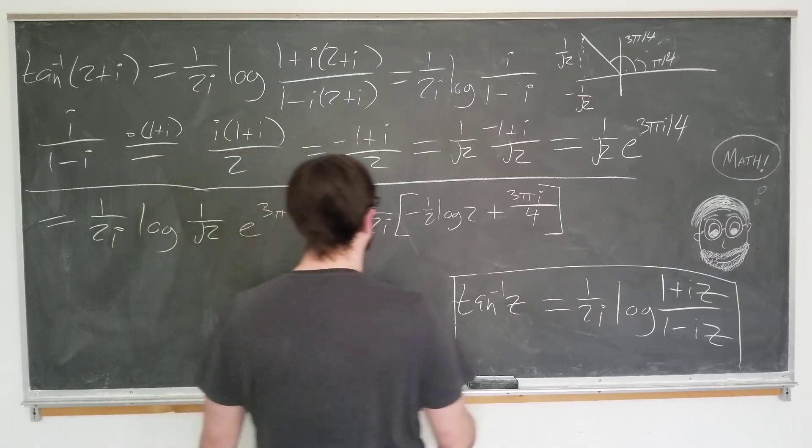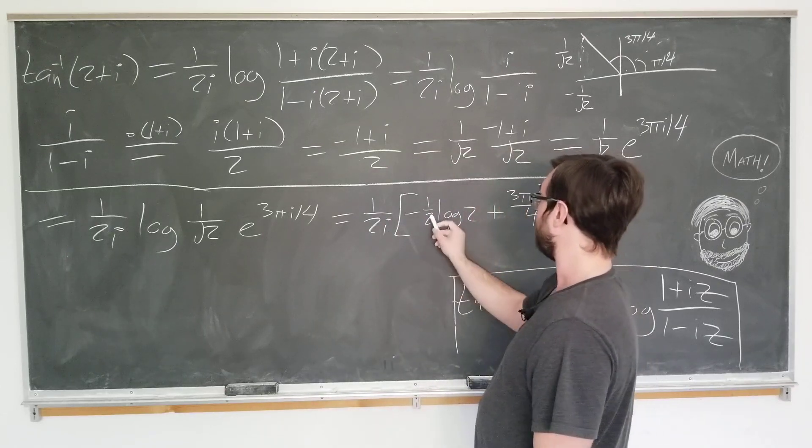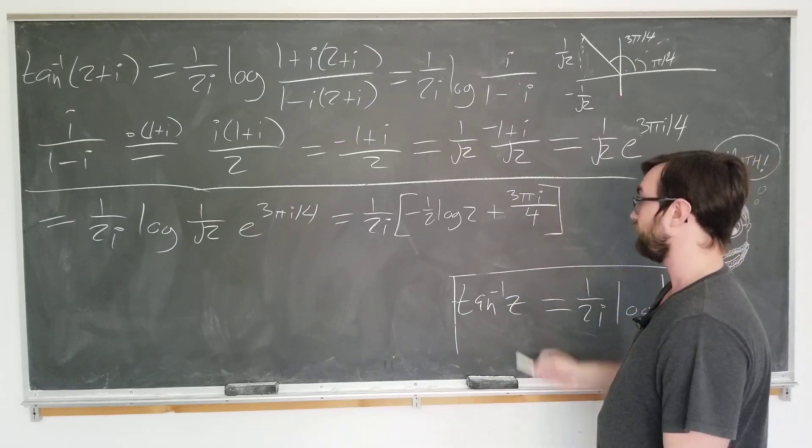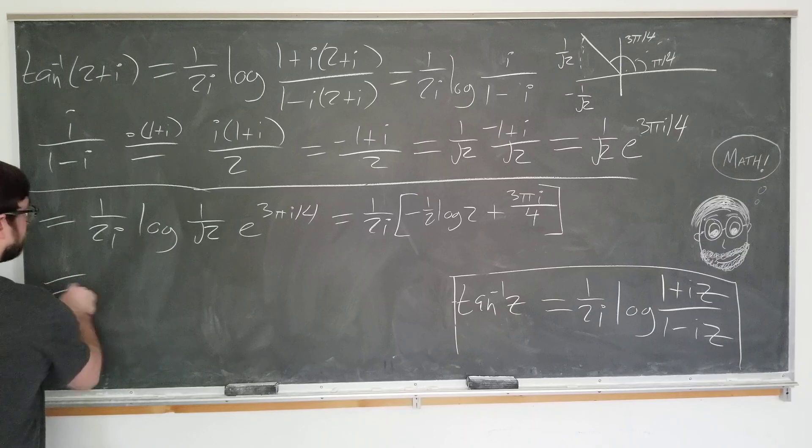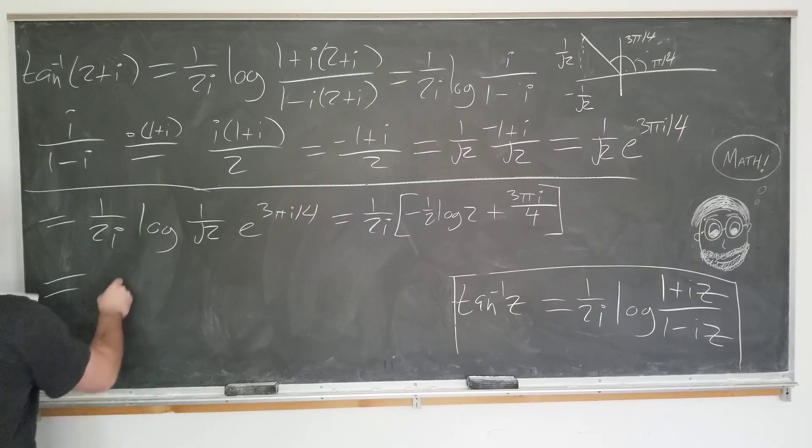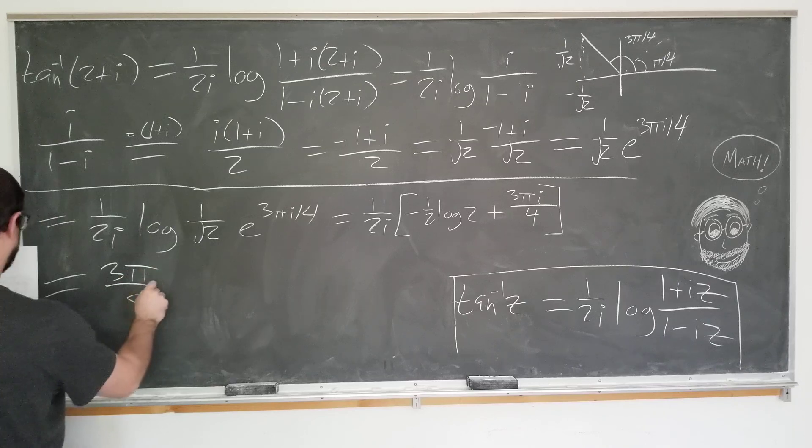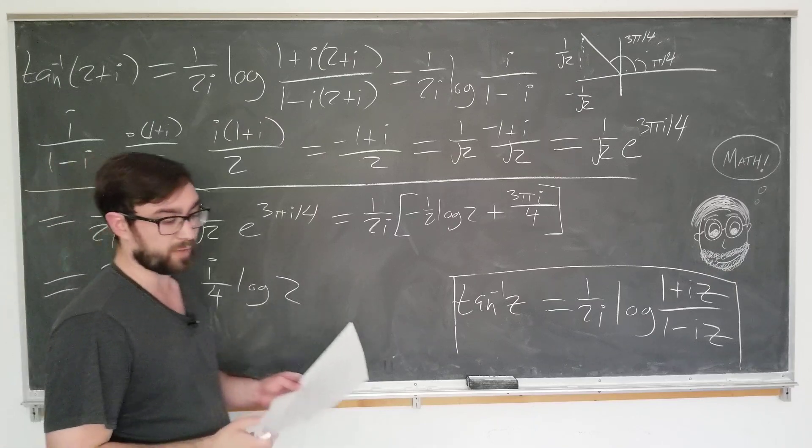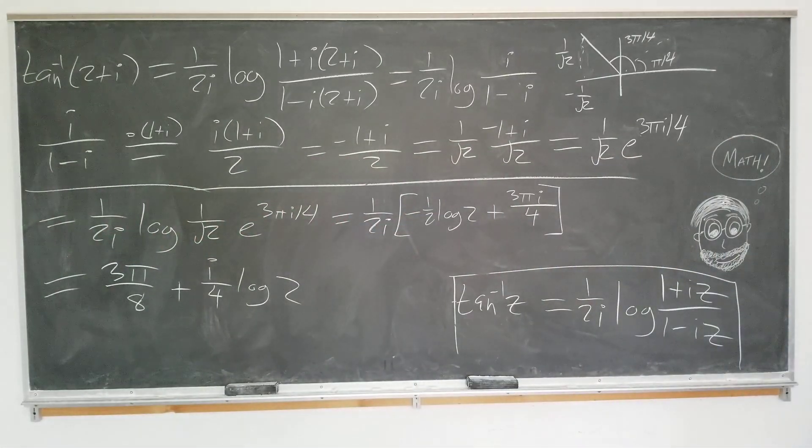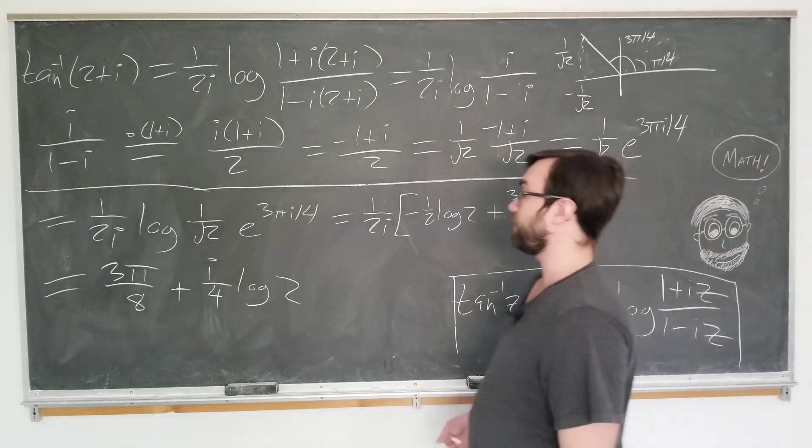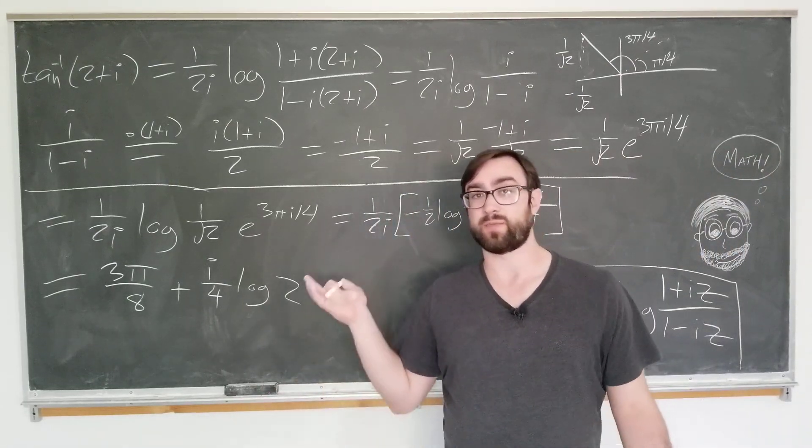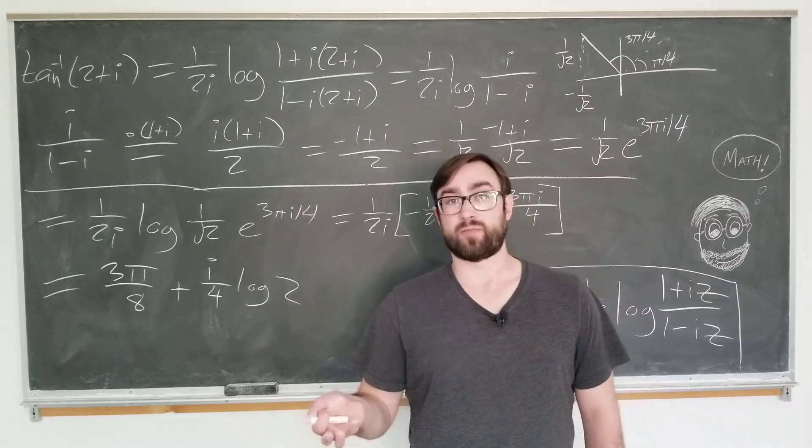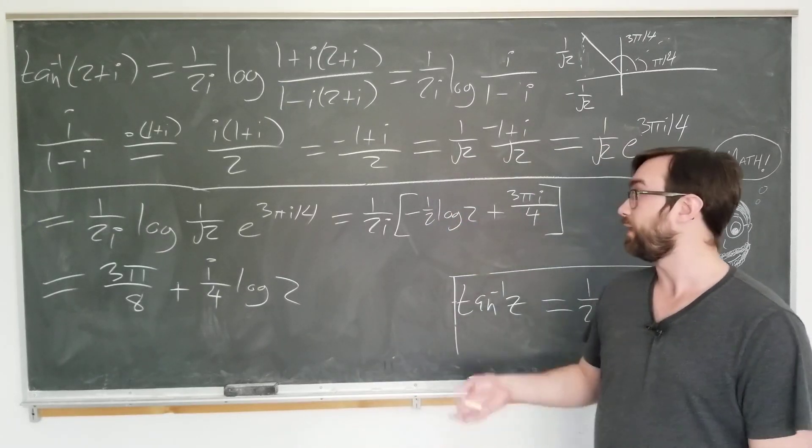We basically have our final answer. We're going to get a minus 1 quarter log 2 here, and the i is going to cancel. So our final answer is 3 pi over 8 plus i over 4 log 2. That should be the simplest way to write it. I checked it on Mathematica, so it should be right. This is how you use the formula to calculate log of a complex number. Maybe you don't need this particular one for anything, but it's just an example. The video was more to show you the proof of the formula. I think the proof is more fun than applying it.